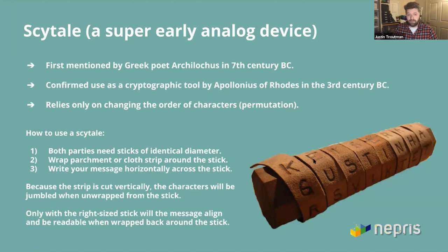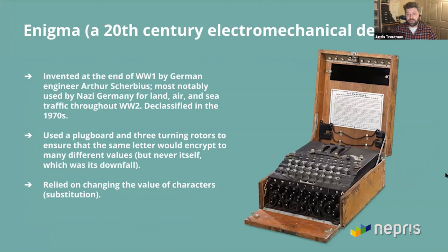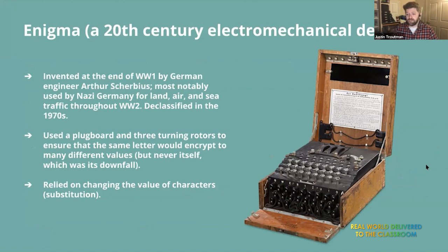Moving on from there — and this might be one you've heard about — it's called the Enigma. At the end of World War One, a German engineer came up with this device. He was in the new area of cryptography trying to sell devices to militaries and governments. The Enigma was quite secure for the time, and this engineer was also a pretty good salesman. He worked on various varieties of this design until he came up with the one eventually used by Nazi Germany for the majority of their land, air, and sea traffic.